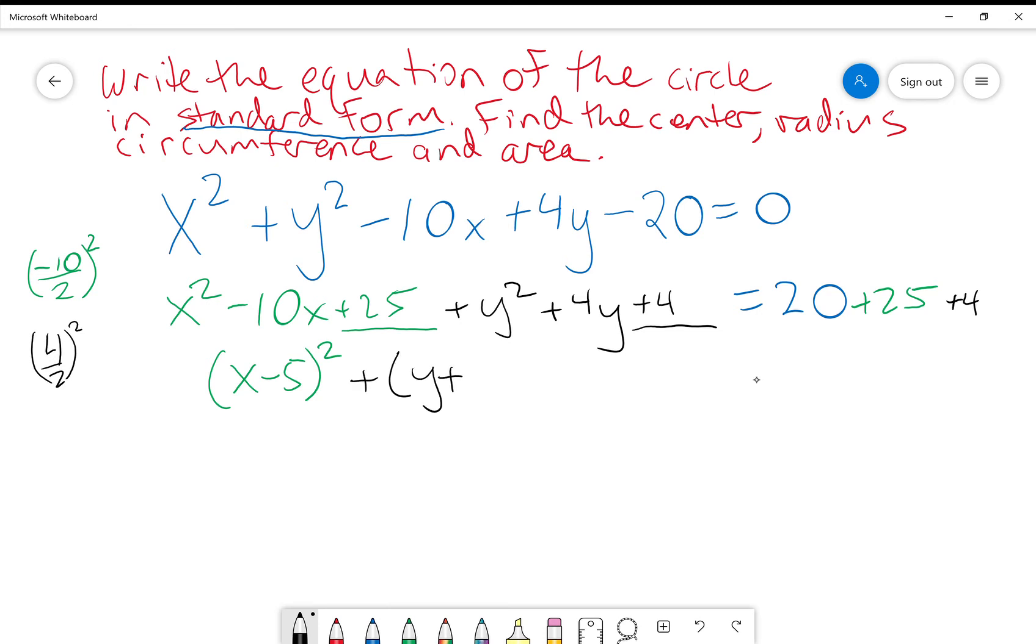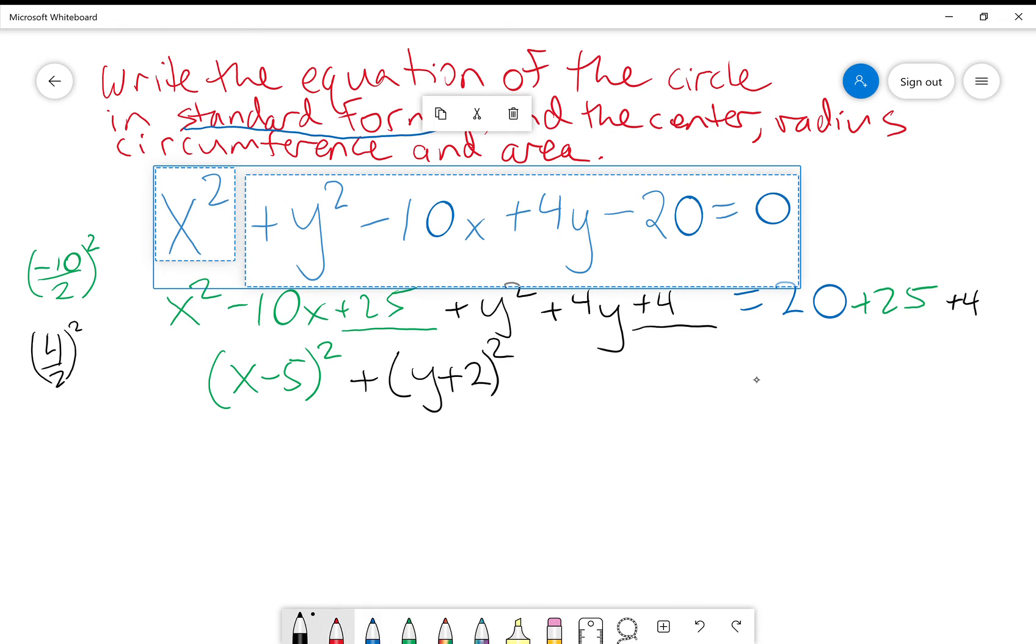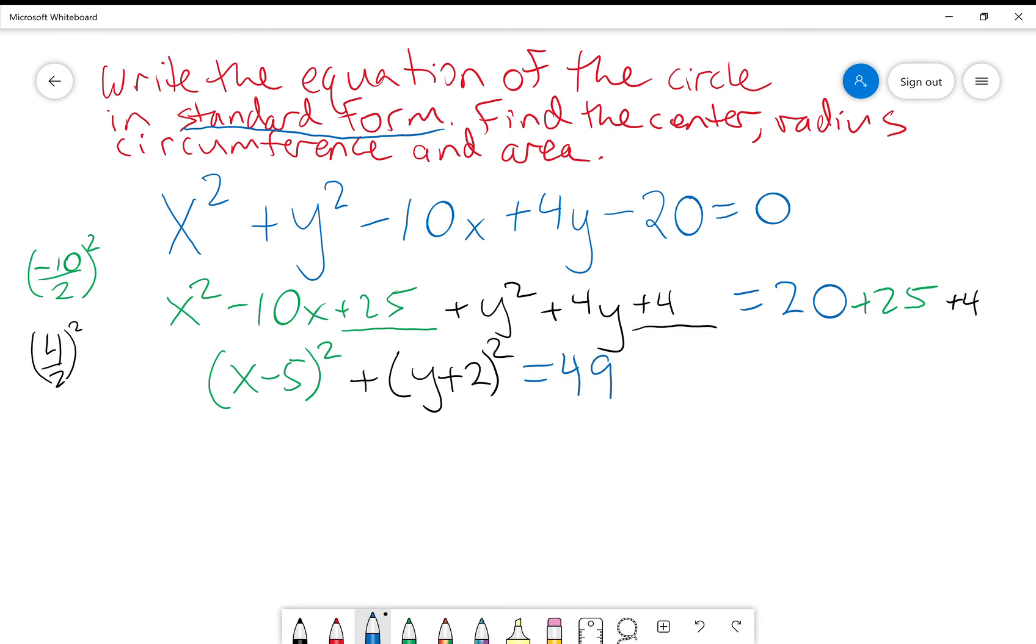Plus, it'll be y plus 2 squared, which multiplies to 4 and adds to 4. Well, that'd be 2 and 2. Alright. And then all that equals, well, 20 plus 25 is 45, plus 4 is 49.